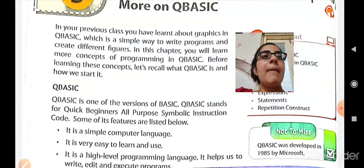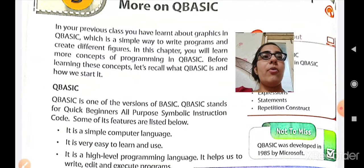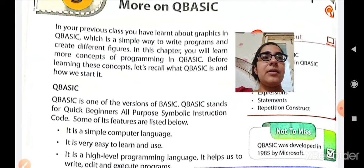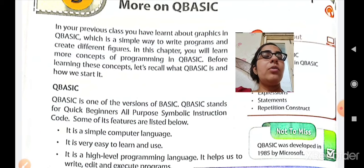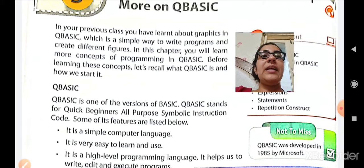Q stands for Quick, B for Beginners, A for All Purpose, S for Symbolic, I for Instruction, and C for Code. This is a language for beginners to learn it very quickly. It is a symbolic instruction code — meaning a code which is written using different symbols. So it is very easy for beginners and they can quickly learn it.